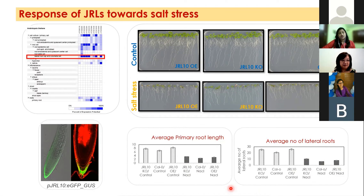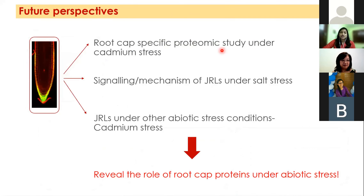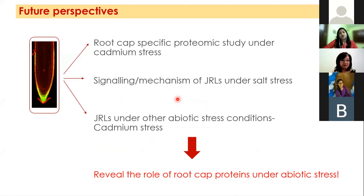Overall, our study indicates that JRLs are novel and strong candidate genes which may have a role in regulating salt stress responses in the root cap. In future work, we would like to perform more root cap specific proteomics under other abiotic stresses, including heavy metal cadmium stress, to find more new candidate genes that might help plants overcome these abiotic stress conditions. We also want to investigate the exact role of JRLs under salt stress, focusing on their signaling mechanisms, and examine whether JRLs also respond to other abiotic stresses such as cadmium.